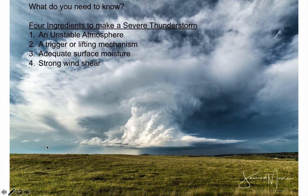As we begin our lectures on severe thunderstorms, here's a quick review of the four ingredients needed to make severe thunderstorms. First, you've got to have an unstable atmosphere — that means you need a negative lifted index and a lot of CAPE.